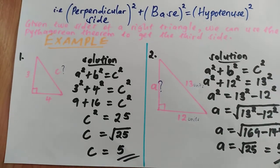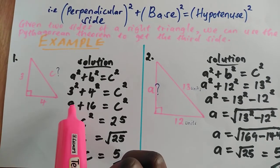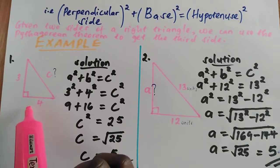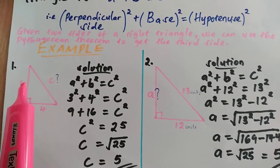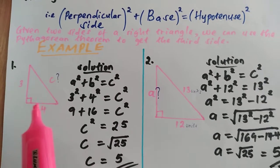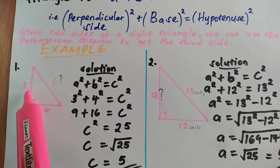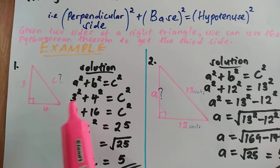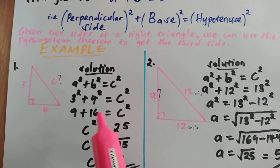In example number one, we have a right triangle — and remember, the Pythagorean theorem only works for right-angled triangles. In this case, we have a right triangle with sides of 3 units, 4 units, and hypotenuse c units. To find c, we use the Pythagorean theorem: a squared plus b squared equals c squared. So a is 3, b is 4, and c is what we are looking for. So 3 squared plus 4 squared equals c squared.